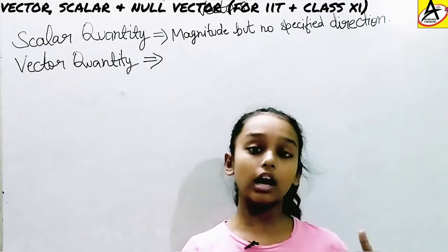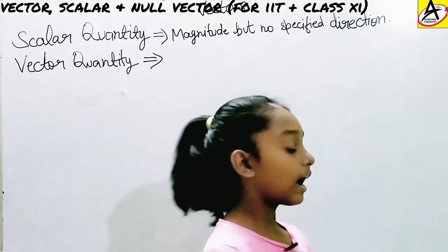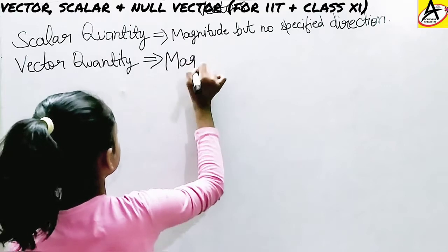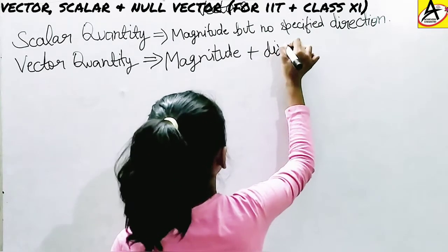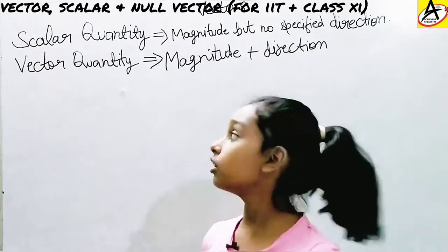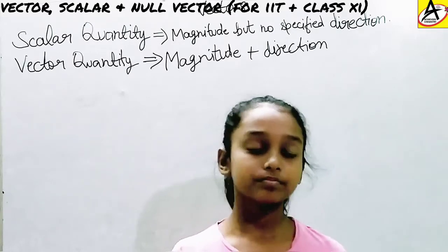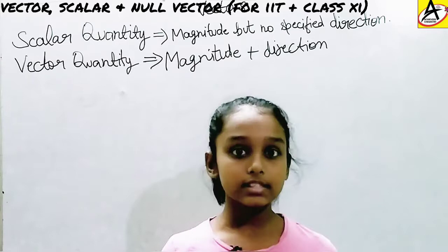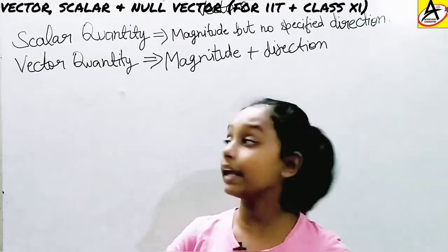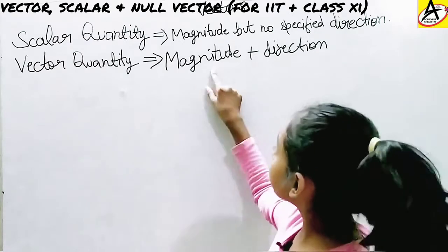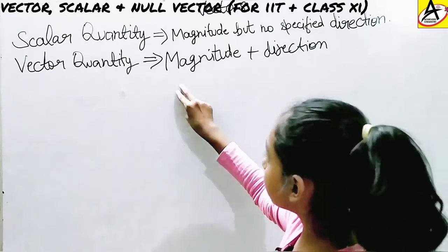Now let's look at vector quantity. A vector quantity has magnitude plus a specified direction. Vector quantity has two factors: the first one is magnitude and the second one is direction. For example, the distance from school to home is 500 meters — this example has both magnitude and direction, so it is a vector quantity.